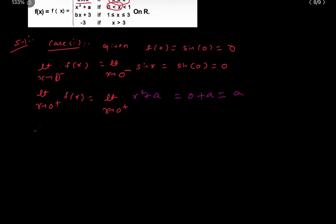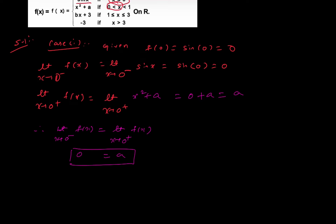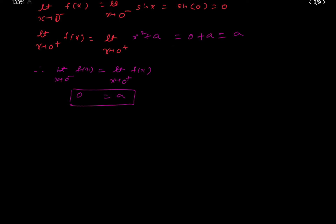Therefore, the necessary condition for continuity: limit x tends to 0 minus of f(x) equals limit x tends to 0 plus of f(x) equals f(0). This gives a = 0, so a is equal to 0.